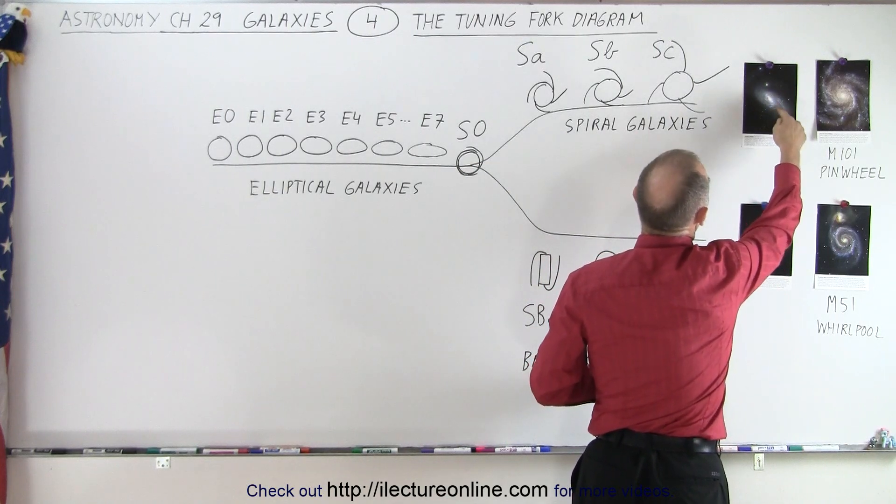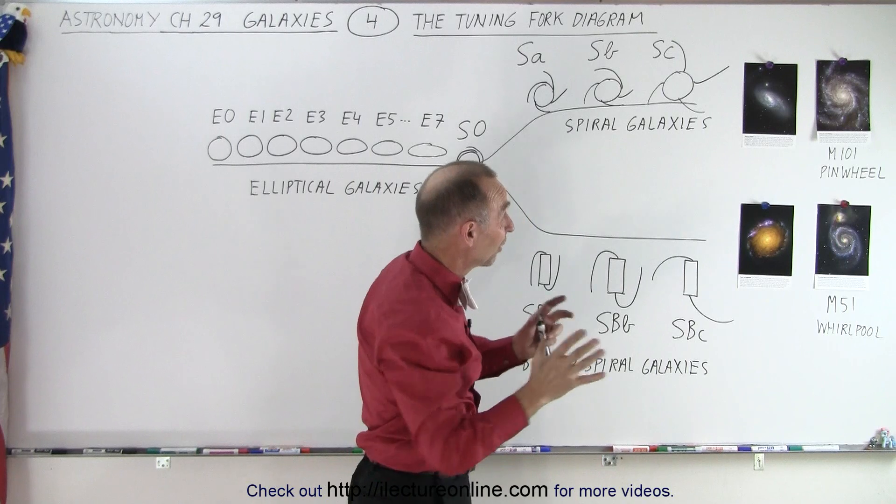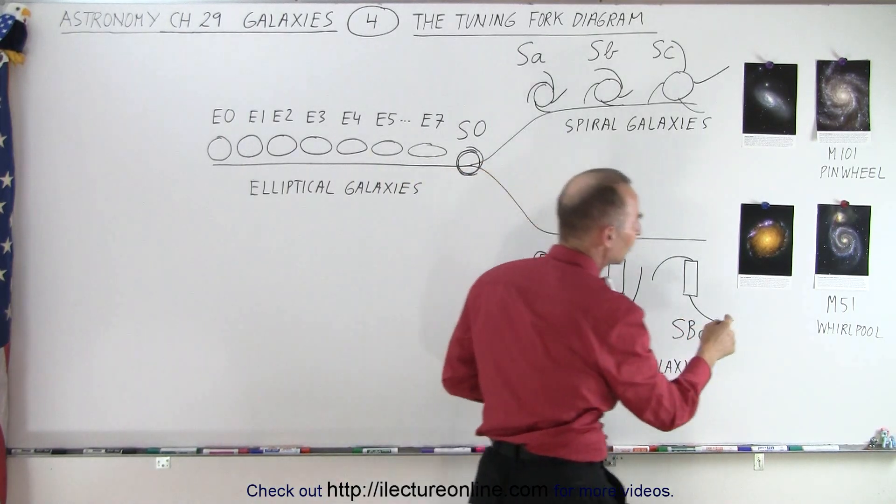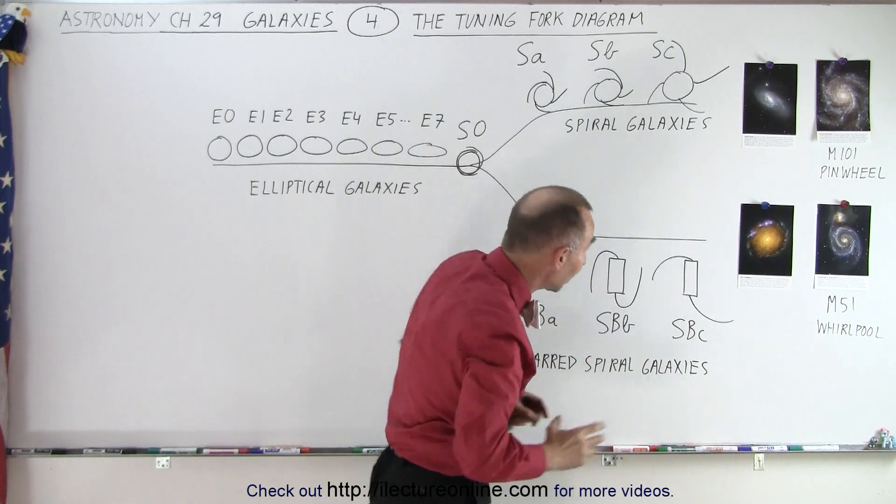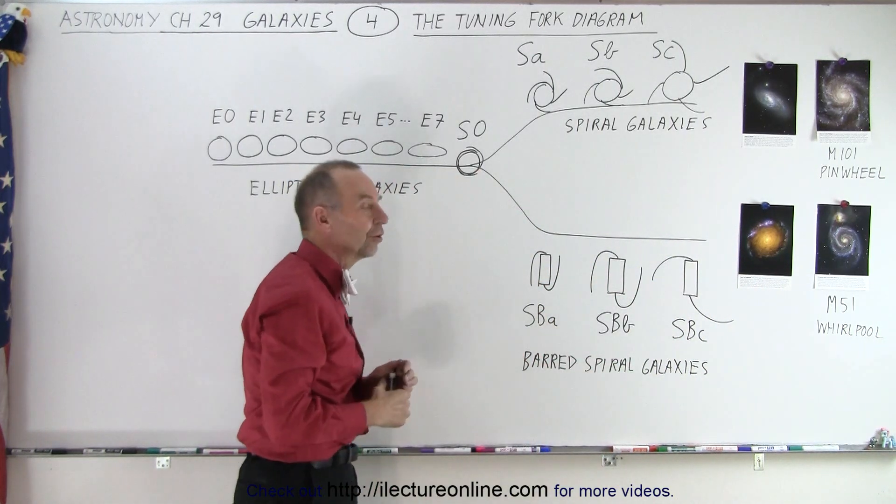Then we have this one right here which is a barred spiral galaxy. The arms are very tightly wound together, I don't know if you can see it on the camera there, but I would call that one an SBA. And then here we have something where we cannot really tell that it has spiral arms. They're there but you cannot distinguish them from the rest of the galaxy. I would classify that as an S0.